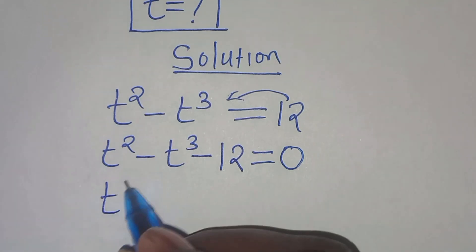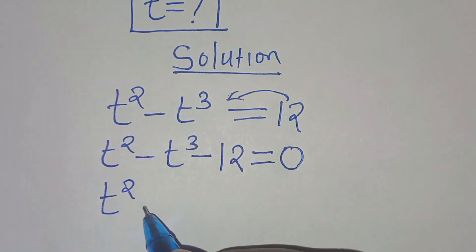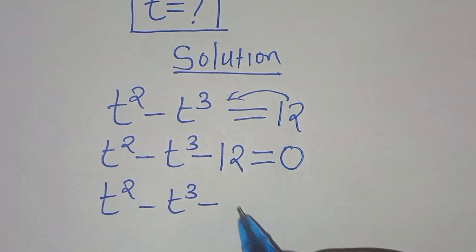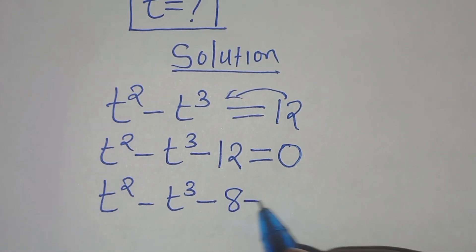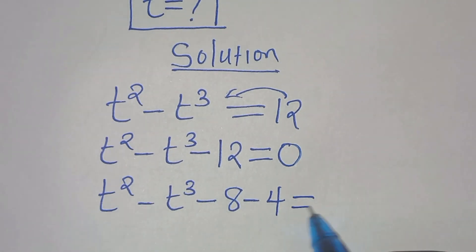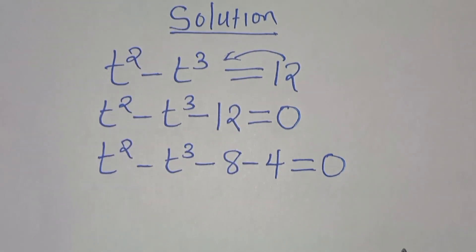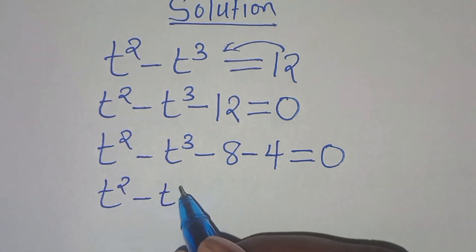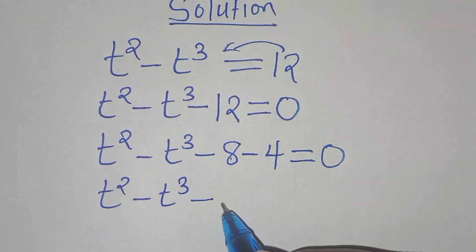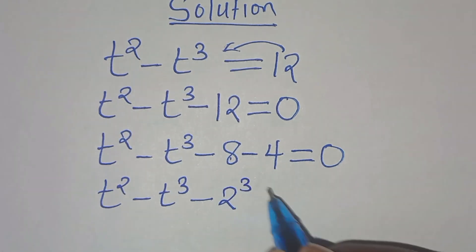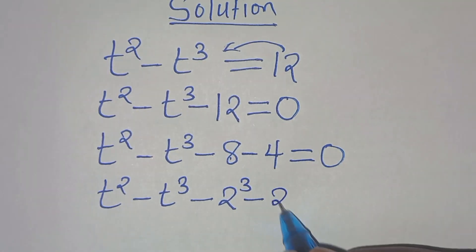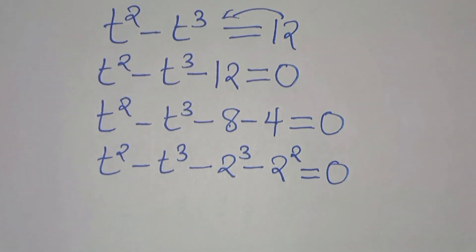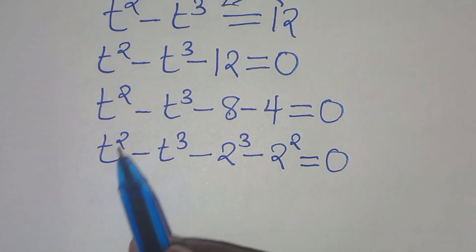This is t squared minus t to the power of 3 minus 12, which we split as minus 8 minus 4, so minus 8 is 2 to the power of 3 and minus 4 is 2 to the power of 2. This equals 0.